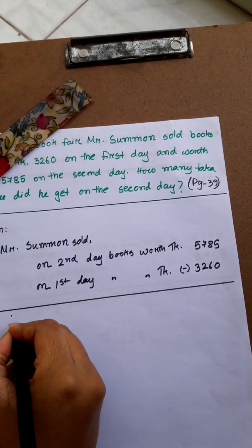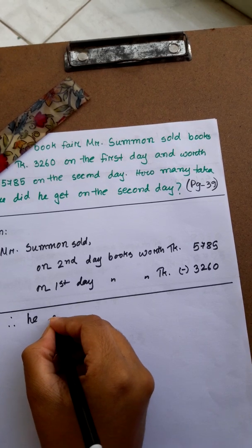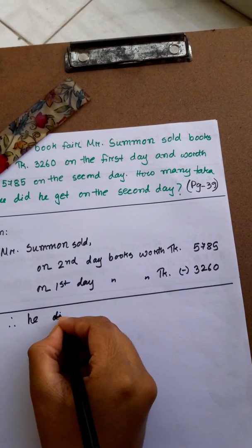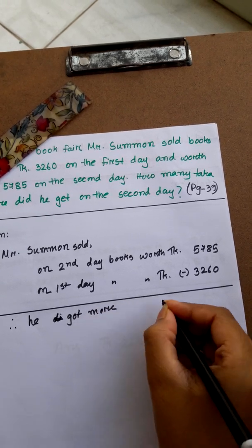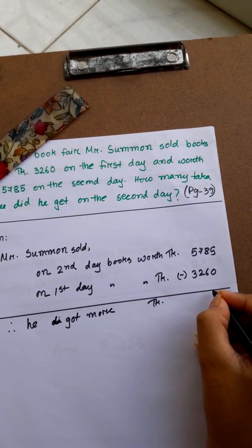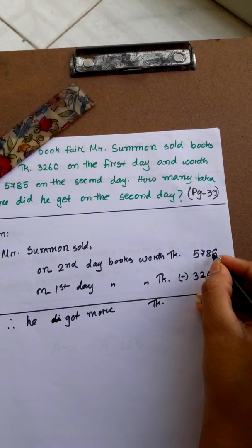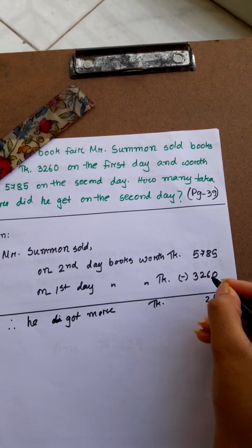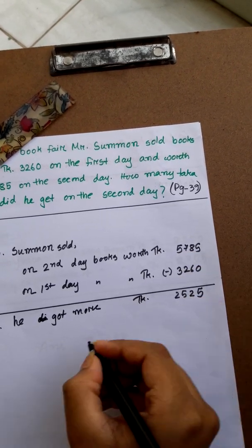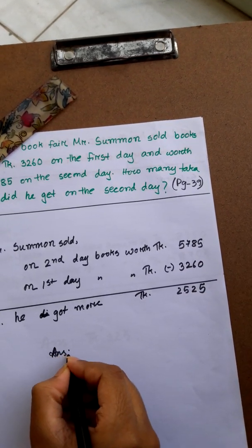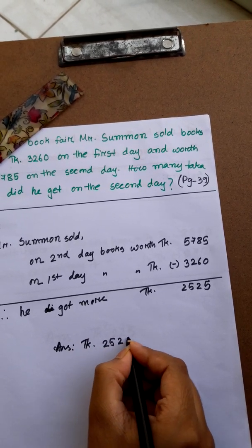Therefore, he got more Taka: 5-0, 5, 8-6, 2, 7-2, 5, 5-3, 2. Answer: Taka 2,525.